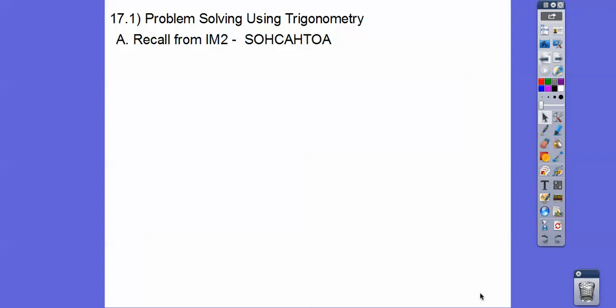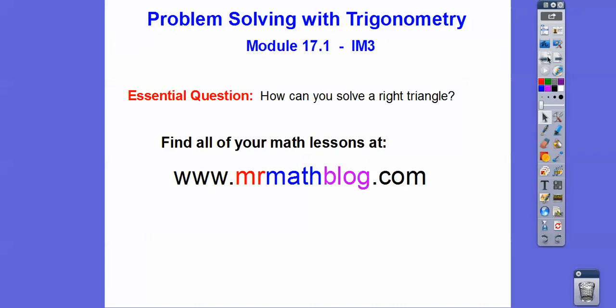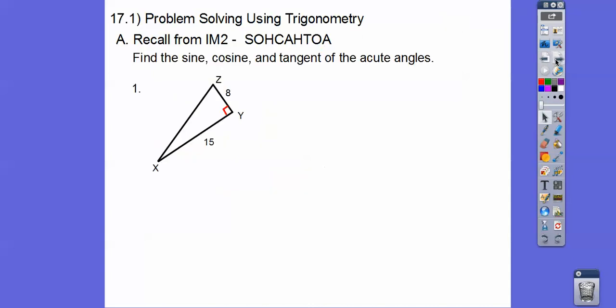Hey, everybody. Do you guys remember SOHCAHTOA? Sine equals opposite over hypotenuse. Cosine is adjacent over hypotenuse. Tangent is opposite over adjacent. So how can we solve a right triangle? We're going to use all of that right here.